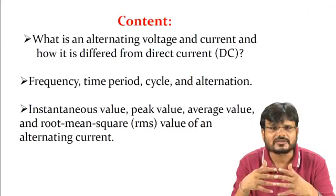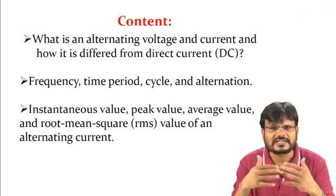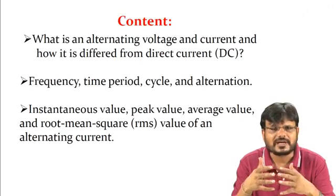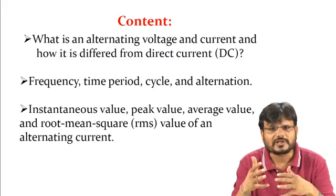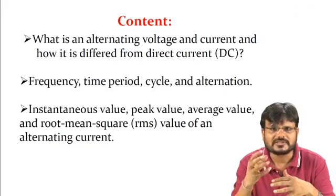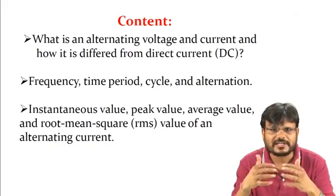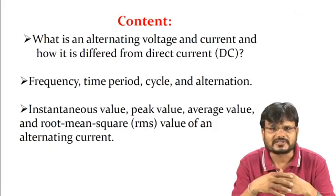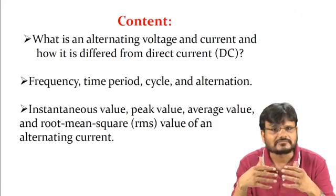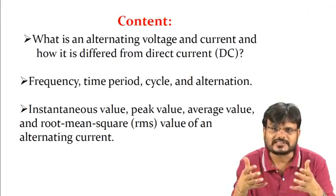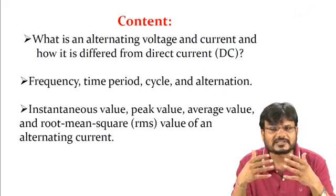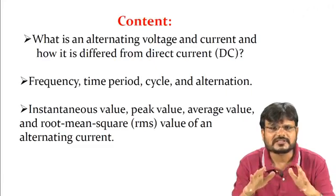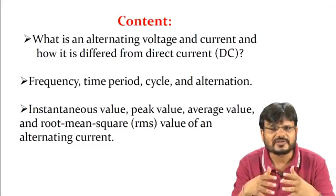There are different terminologies used in AC circuits. We need to understand instantaneous value, peak value — which is the maximum value — and average value. In AC there is a positive cycle and a negative cycle, so the net average over one full cycle is 0. We also need to find RMS value for sinusoidal, square wave, or sawtooth waveforms.